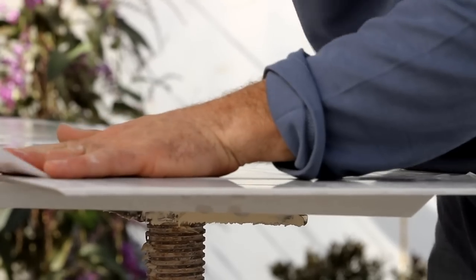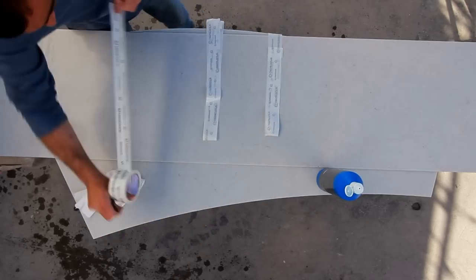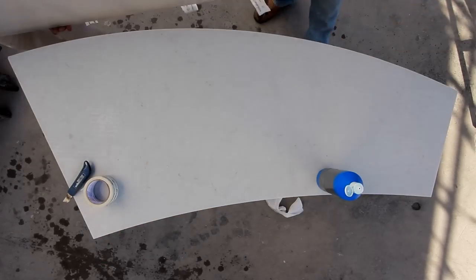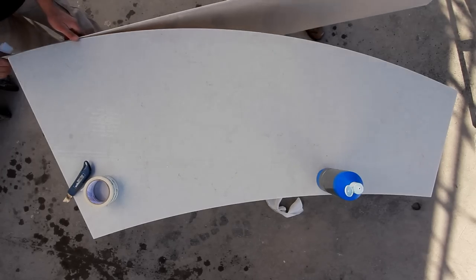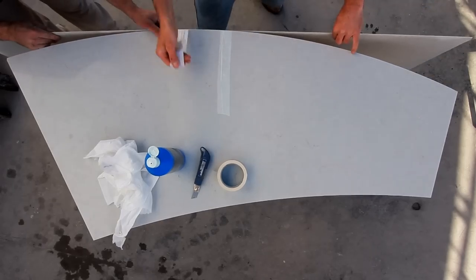Next, arrange strips of tape on the surface of the heated Caesarstone. Bend the Caesarstone around the edge of the coffee table until it takes on the correct shape and secure it with the strips of tape.